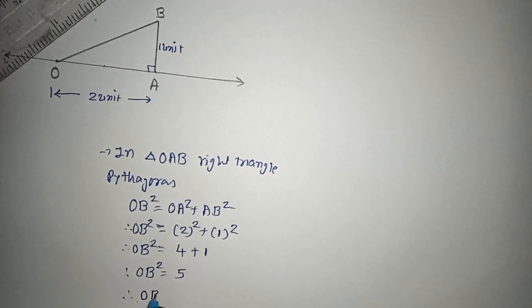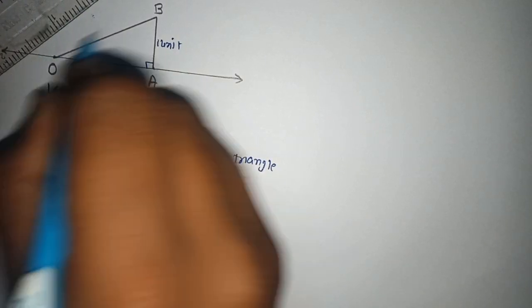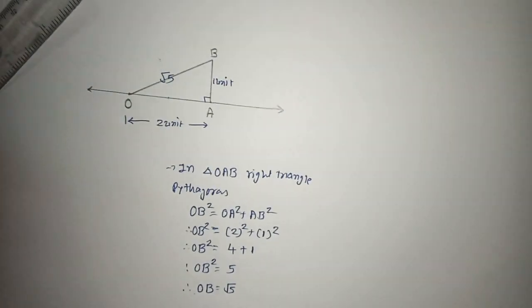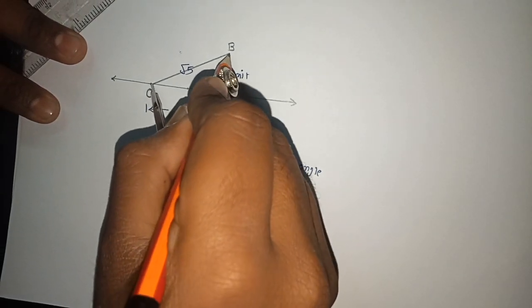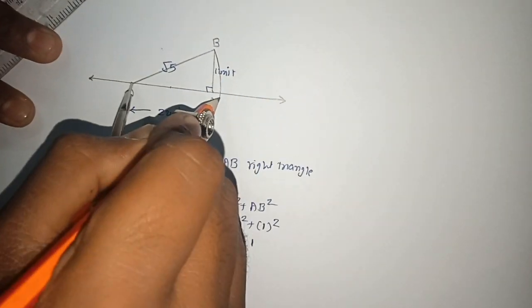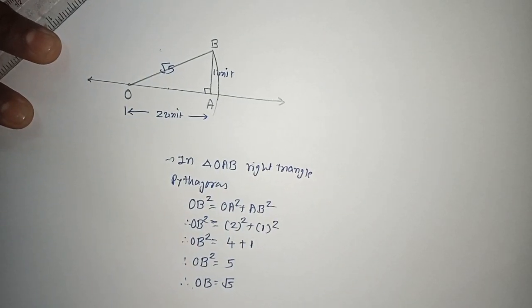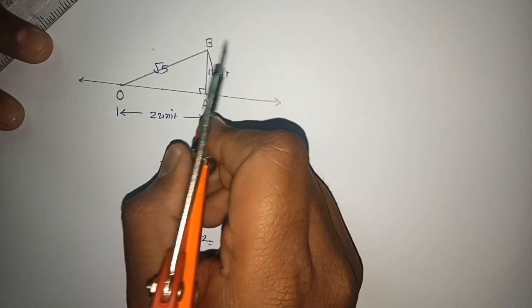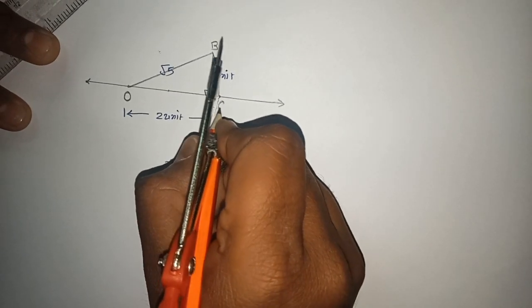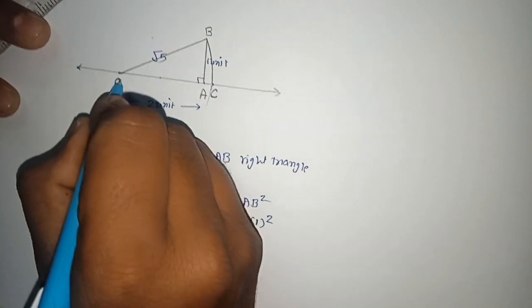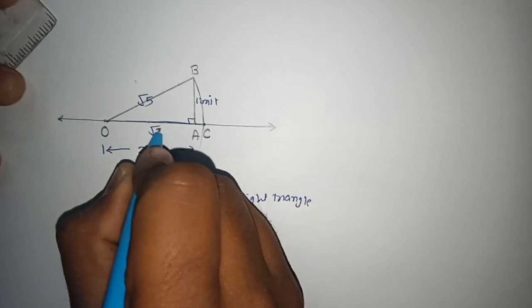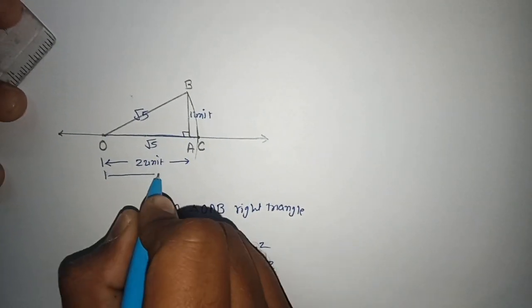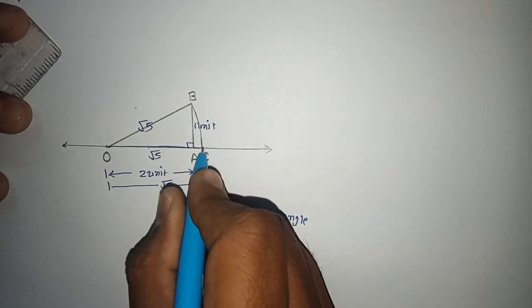Therefore OB is equal to under root of 5, which we have to represent on the number line. To represent it, I will take the measure from O to B and draw an arc which intersects our original number line at a point. I will give the name of this point as point C. So this distance from O to C is equal to under root of 5.